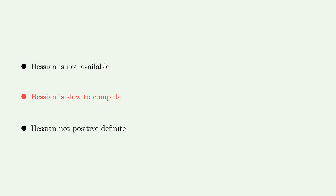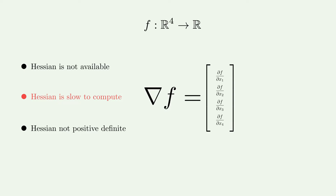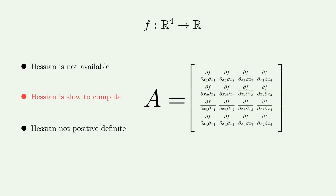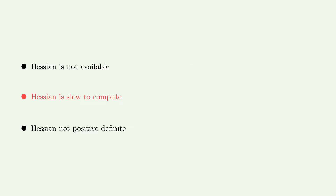The gradient is as large as the input dimension of the function. For example, if we have a 4-dimensional input, then we need to compute 4 values. The Hessian, however, has way more values — it is a quadratic matrix of the input dimension, so for a 4-dimensional input we need to compute 16 values. We can reduce this a bit by using the symmetry of the Hessian, effectively computing only half the values. But there are still way more elements to compute than for the gradient, so computing the Hessian takes way more time.